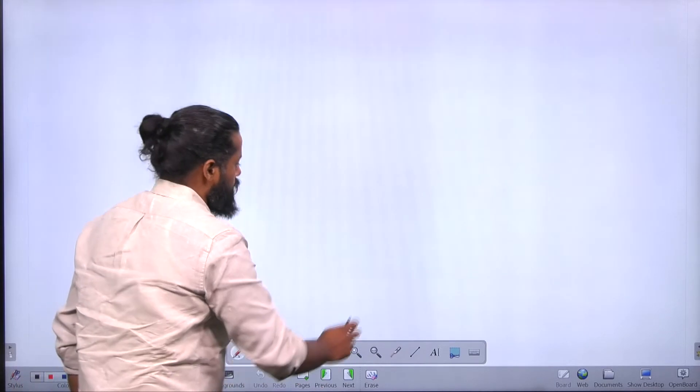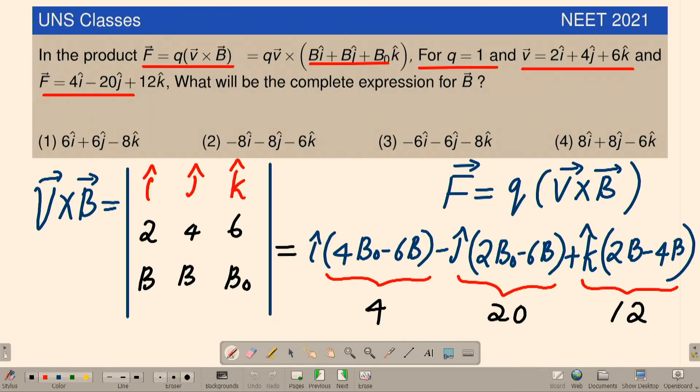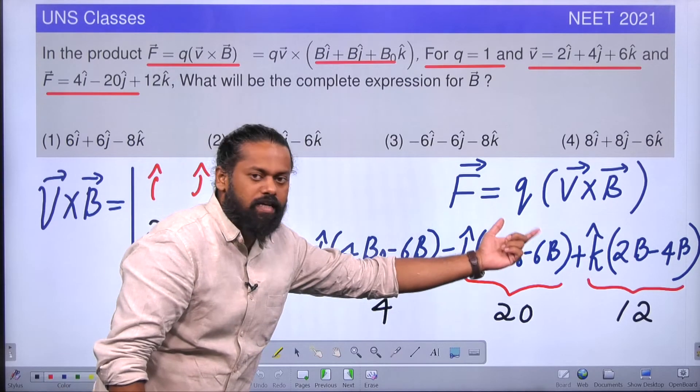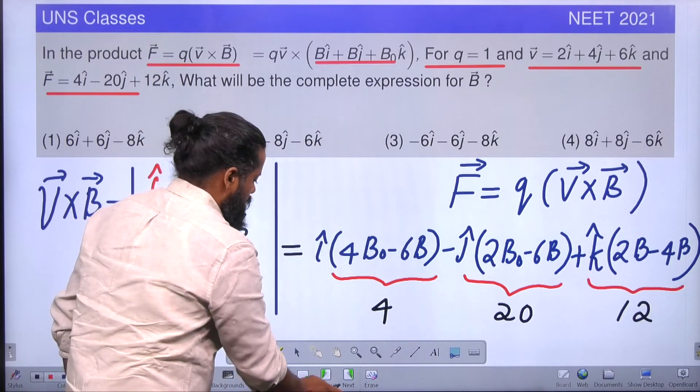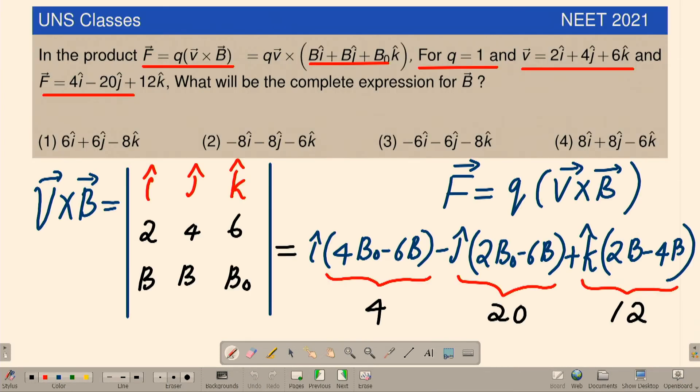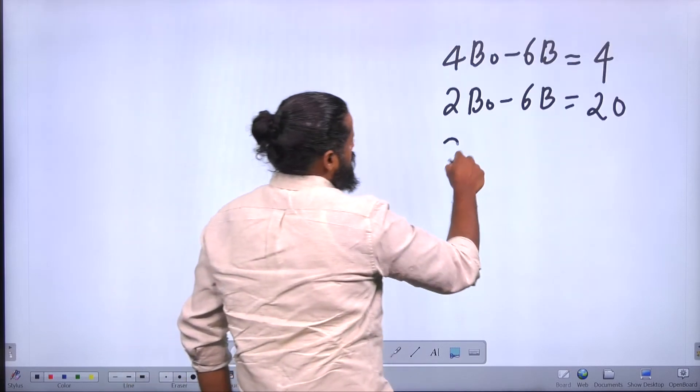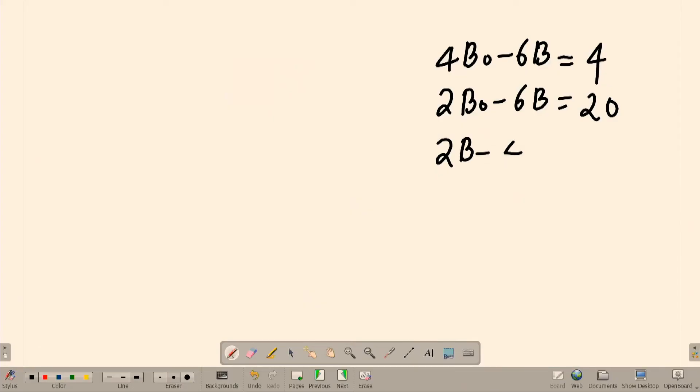Equation number 1. Next one: 2B₀ - 6B is equal to 20. The last one is 2B - 4B is equal to 12.